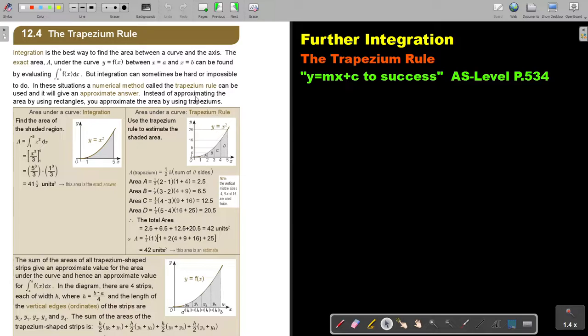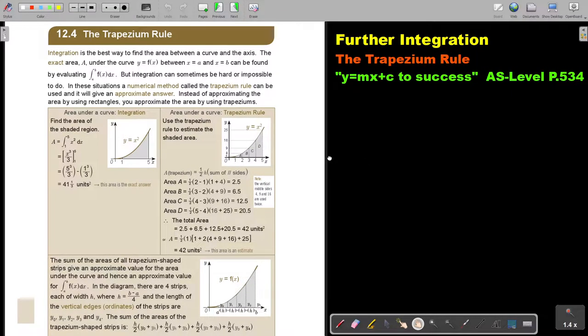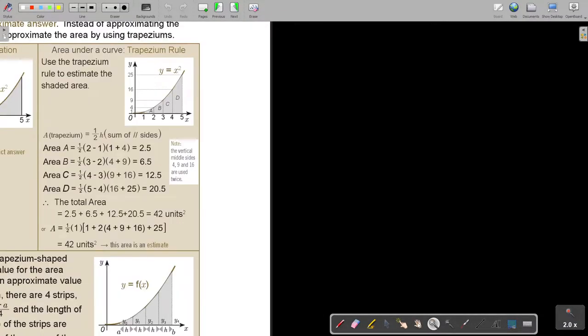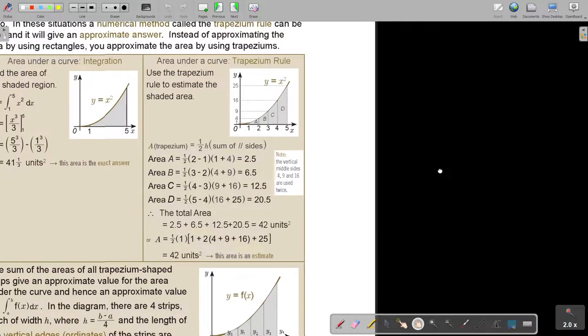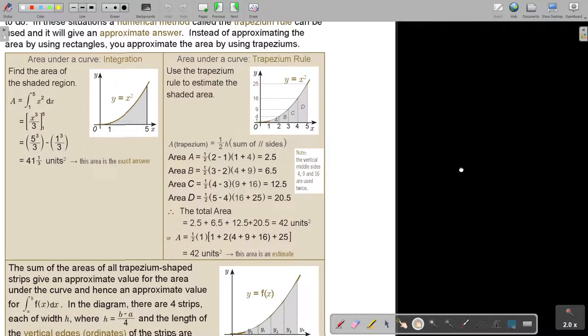Instead of approximating the area by using rectangles you approximate the area by using trapeziums. That's where the rule comes from. Let's look at an example and look at the difference.